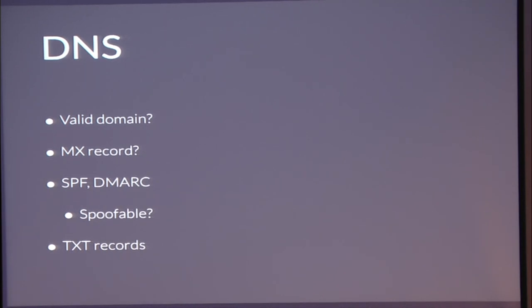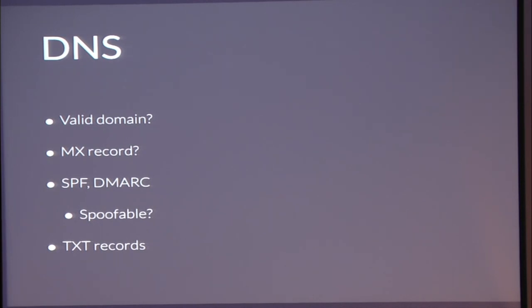DNS: we use it for a bunch of things. Is it even a valid domain? You'd be surprised. Does it have an MX record? We look at SPF and DMARC records to determine whether it's spoofable. We can't tell you whether the email is spoofed — we don't have the headers — but we can look at SPF and DMARC enforcement to give you a likelihood that it's even spoofable. We're also doing some cool stuff with TXT records — looking for the presence of things that would denote high reputation, like email automation or marketing platforms such as SendGrid and MailChimp. Things you'd have to pay money for that an attacker is not likely to use.